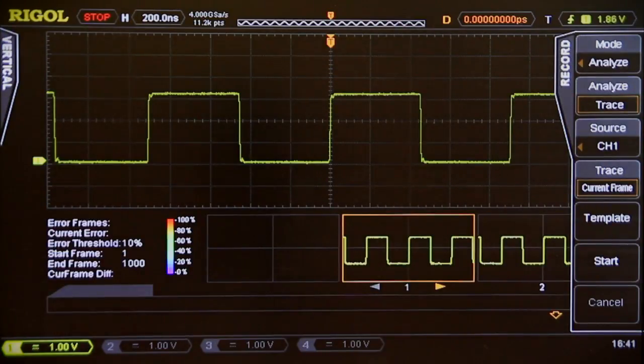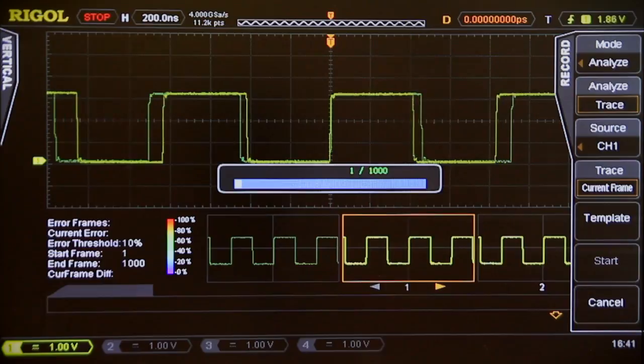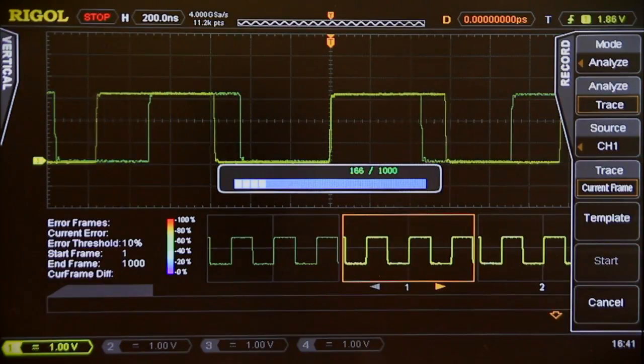This time, let's use a trace analysis. In a trace analysis, you select one frame as the reference. All the other frames are compared against it, resulting in a point-by-point RMS difference value for each of the 1,000 frames.